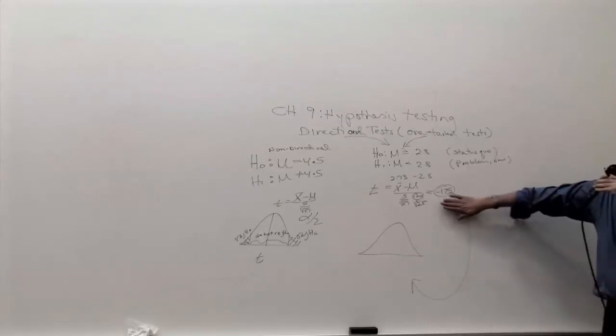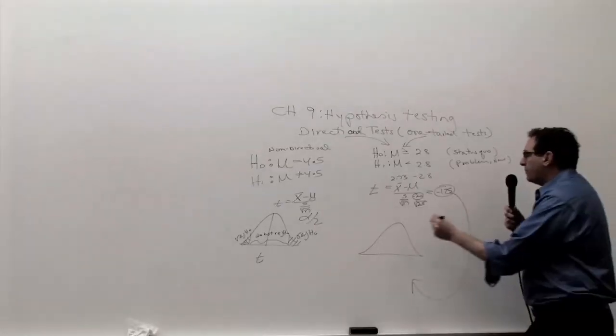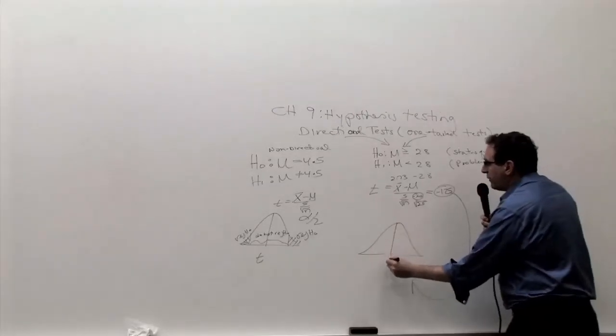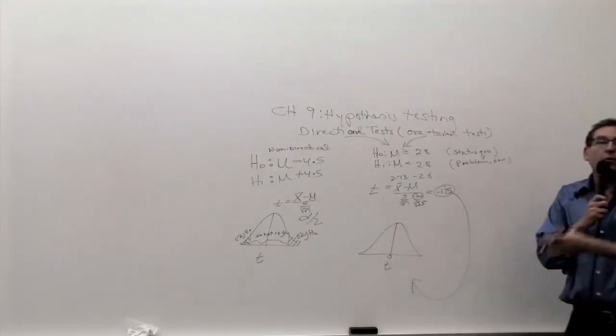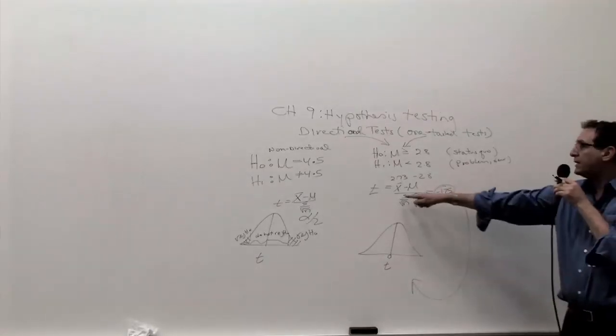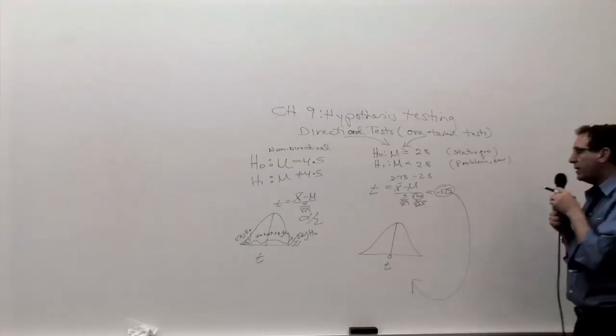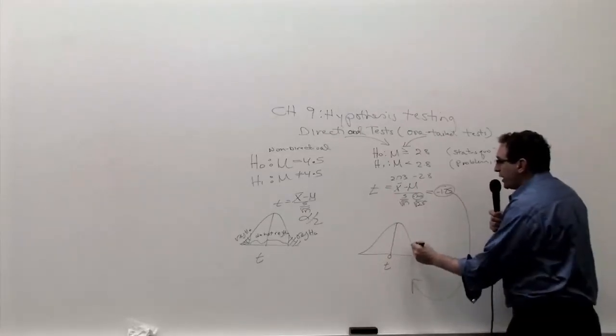And you put that number aside for a second until you're ready to go to step number four. Now we go to step number three. Step number three is you've got to decide to make the t diagram or the z diagram. Of course, it's going to be the t because, first of all, that's only t. And the whole test will only be t. Secondly, we're given the sample standard deviation, which was the real reason why we're going to the t.